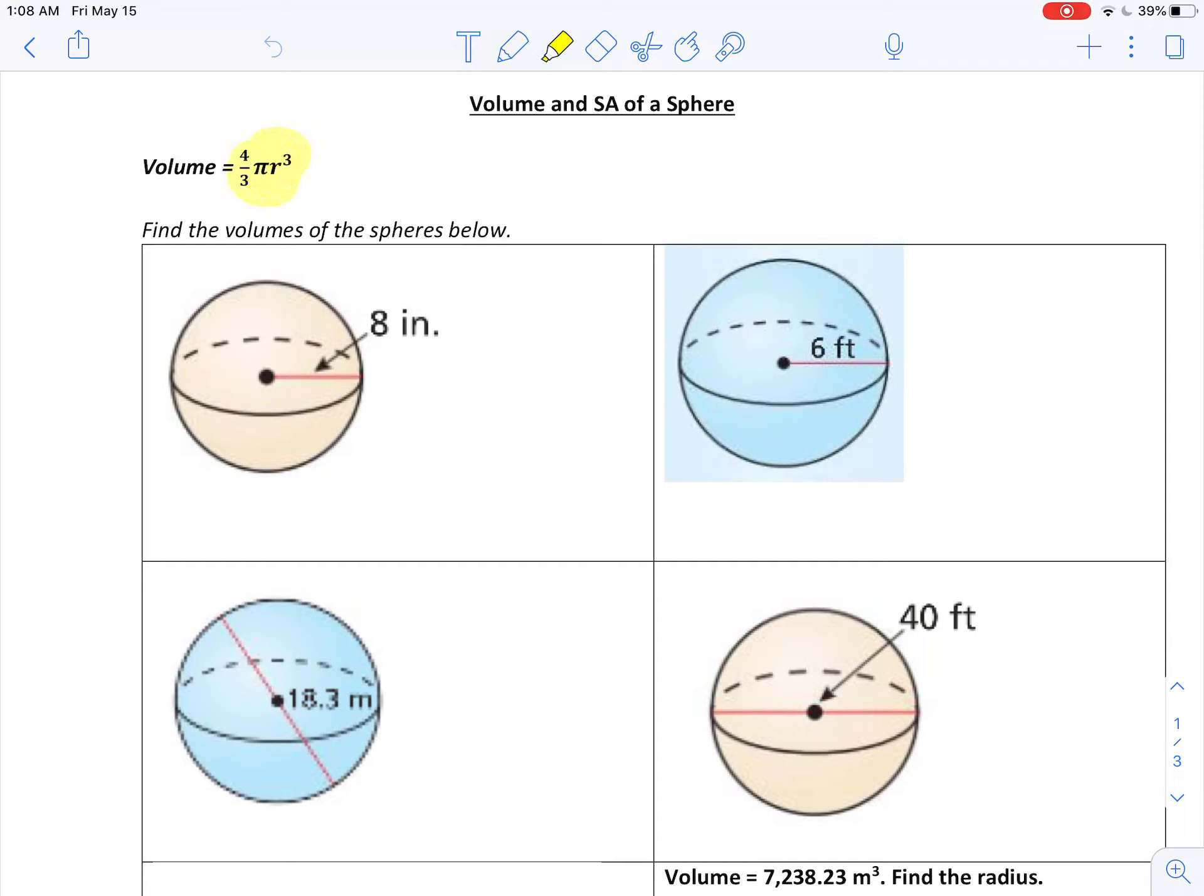So the volume formula for a sphere, first thing we'll do here is four-thirds pi r cubed. The thing to look out for is, do I have a radius, or do I have something else? Here I've got a radius of 8 inches, so I'll just plug that right in. Four-thirds times pi times 8 cubed is 512. So 4/3 pi r cubed.